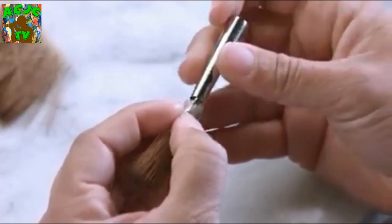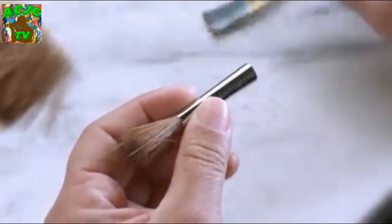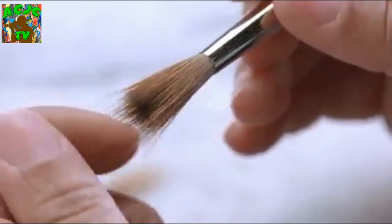She inserts the hairs into a metal band called a ferrule made of nickel-plated brass. She feels how they fit in the ferrule. If the fit's too tight, she removes some hairs. If it's too loose, she adds some.